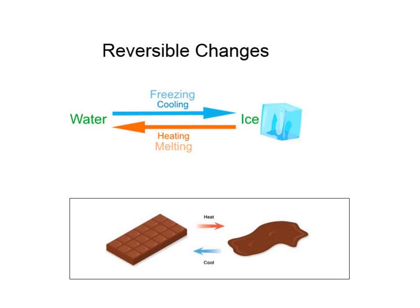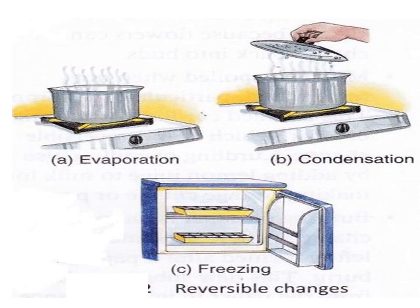Another example is the melting of chocolates: when heated it becomes melted, and when cooled through the freezing process it becomes solid again. In this picture you can see three processes — evaporation, condensation, and freezing — all of which are reversible processes. For example, if you capture the steam made when a kettle boils, you can turn it back into water by cooling it. Other examples of reversible changes are folding a paper and blowing a balloon.